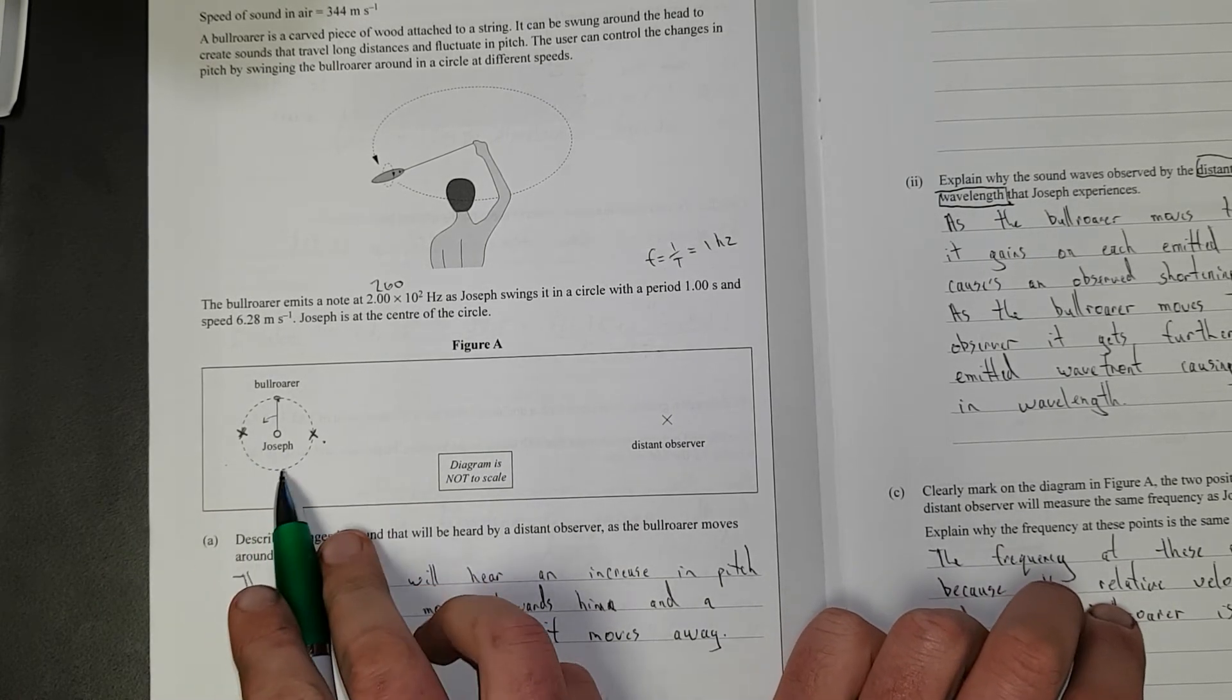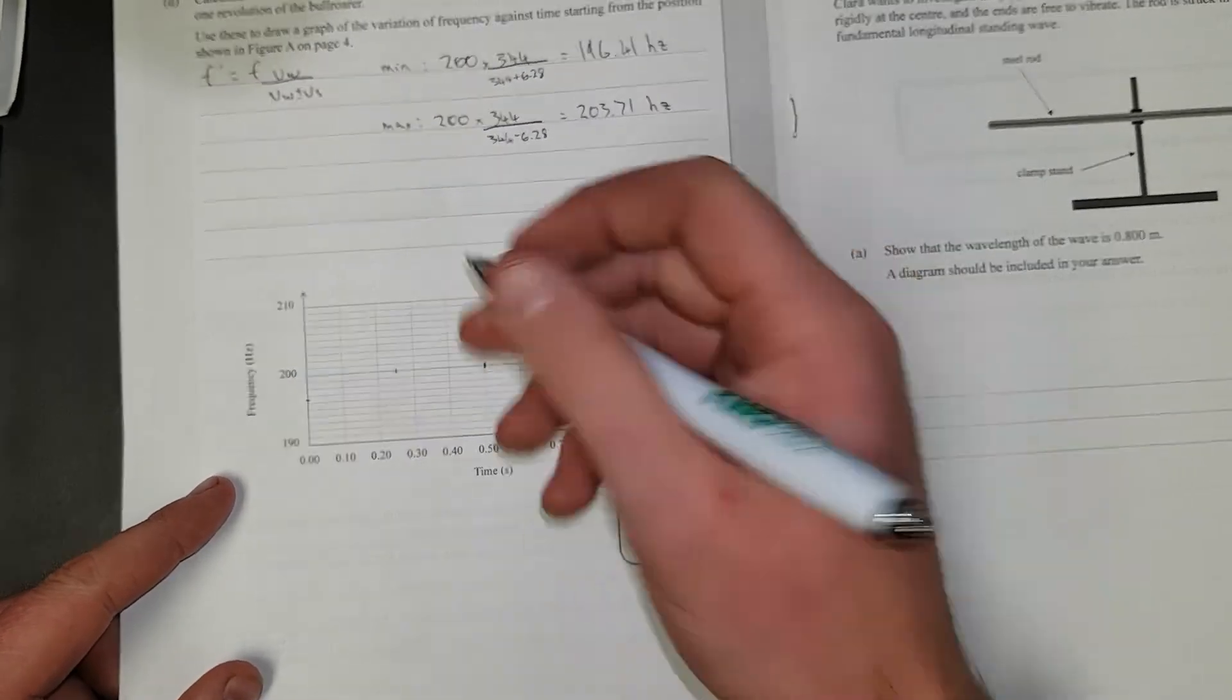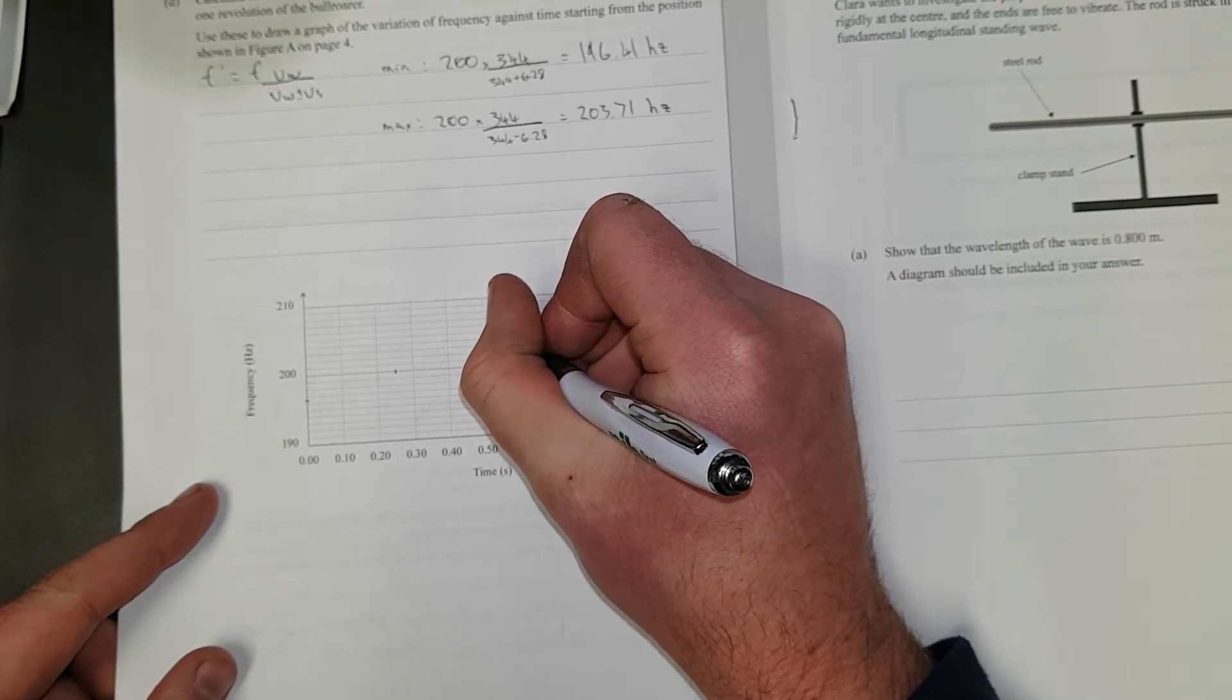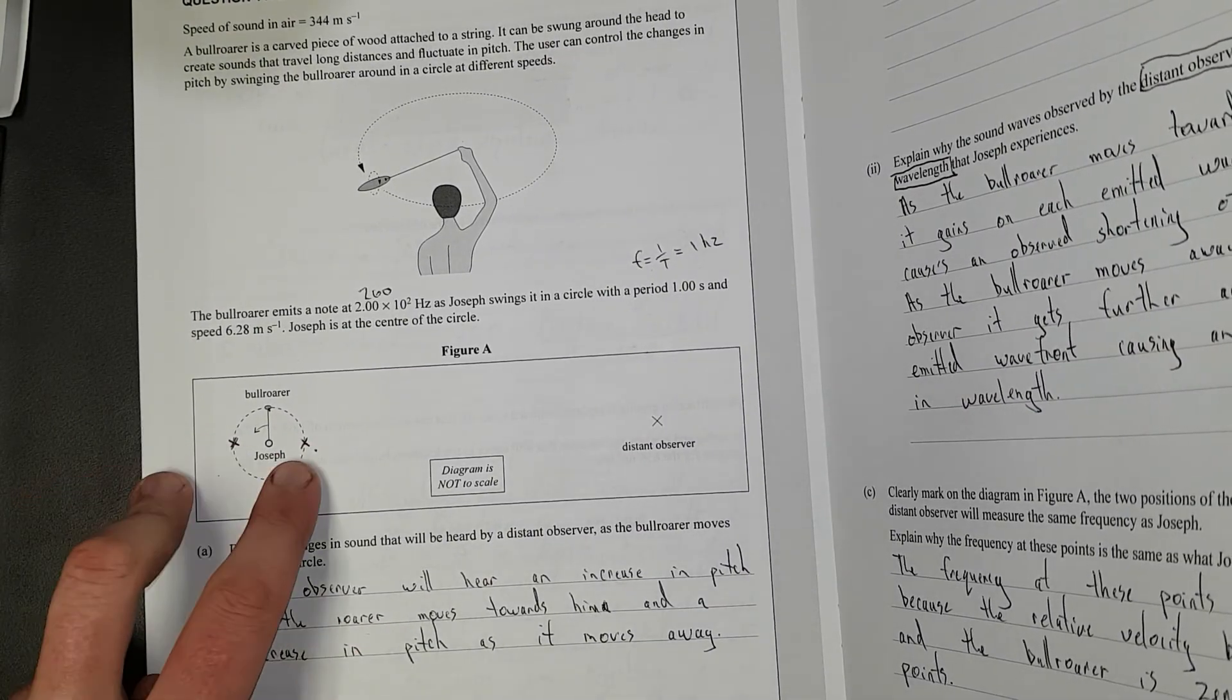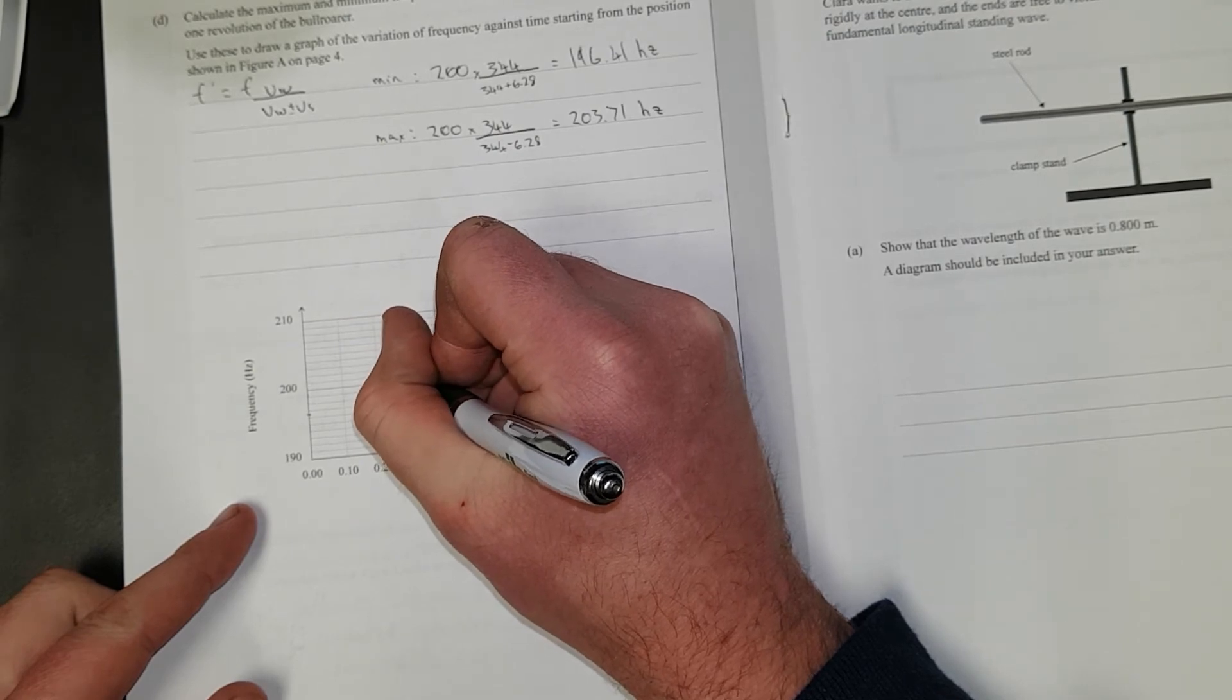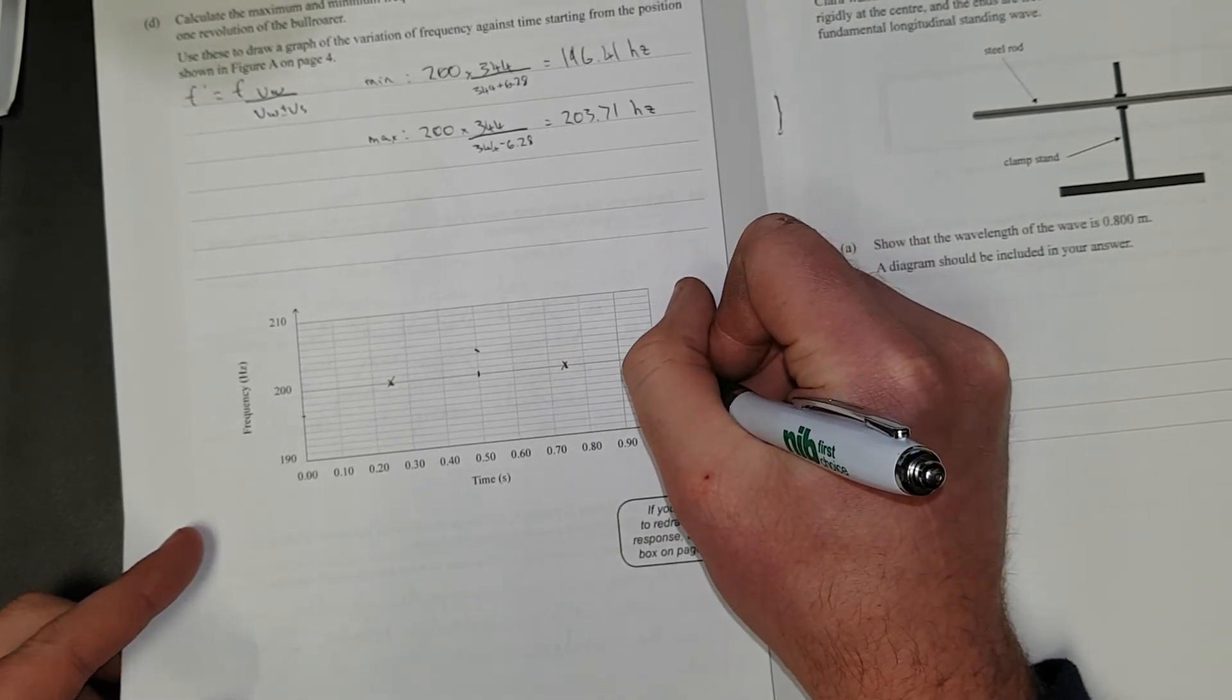It'll be at the maximum frequency. Don't draw on the picture because you'll ruin your marks for those two. But here, the bullroarer is coming towards. It'll be the maximum frequency, which is going to be 203.7. And that occurs at time half a second. Here and here, that's quarter of a second. That's three quarters of a second. Quarter of a second, it's going to be zero. Three quarters of a second, it's going to be zero. Here, I'll put a mark here, and across here, it's going to be zero. It's going to finish where it started because it's just a circle.